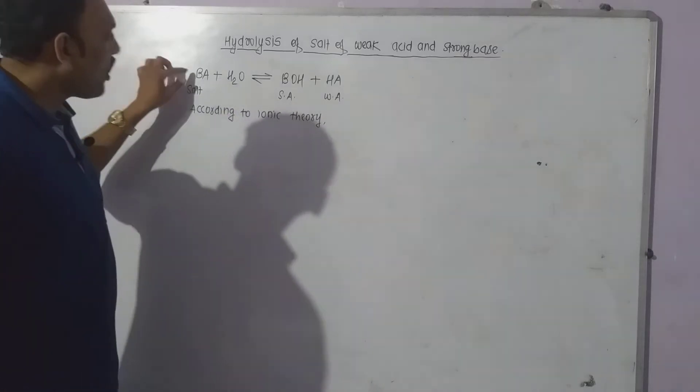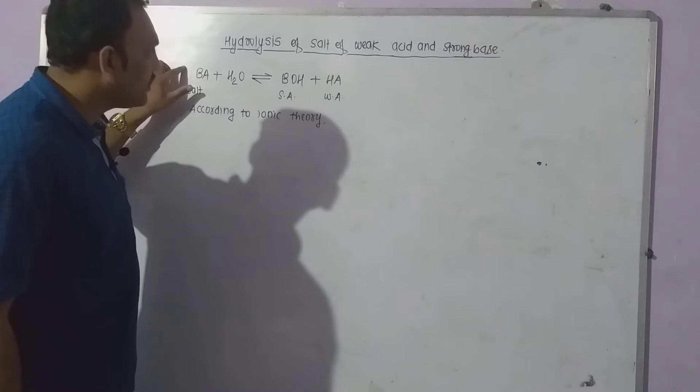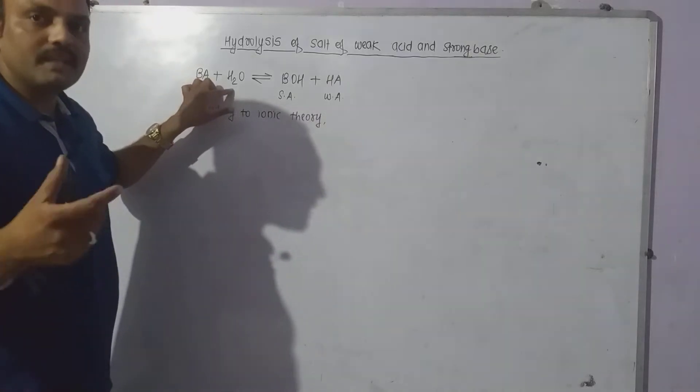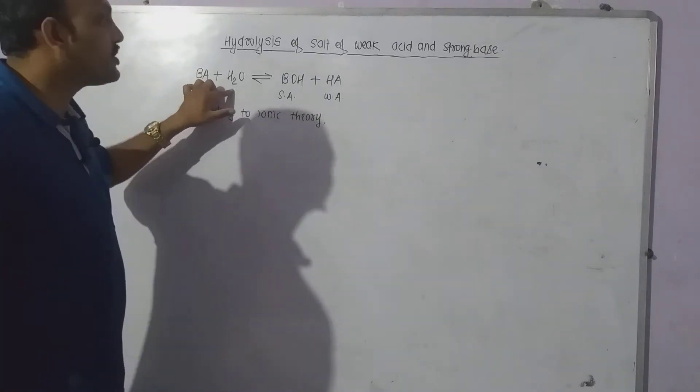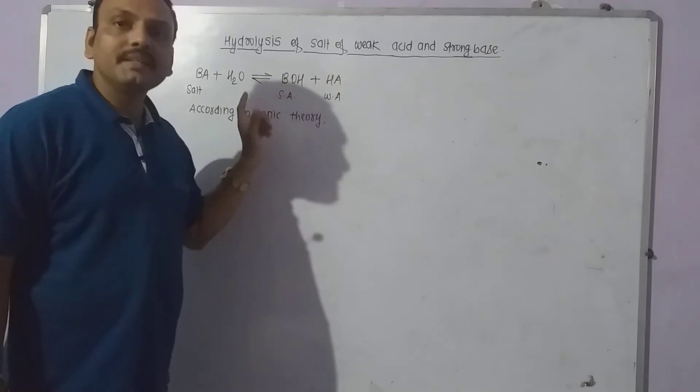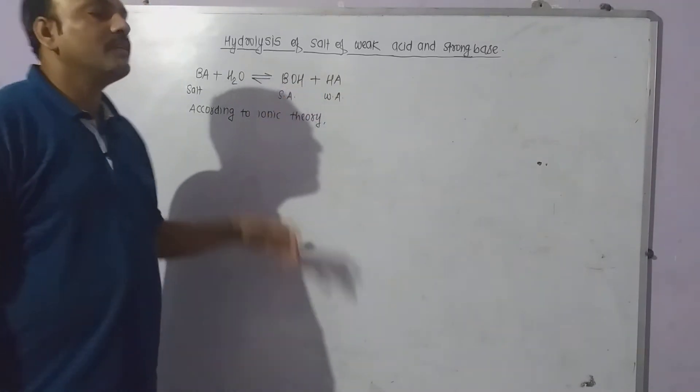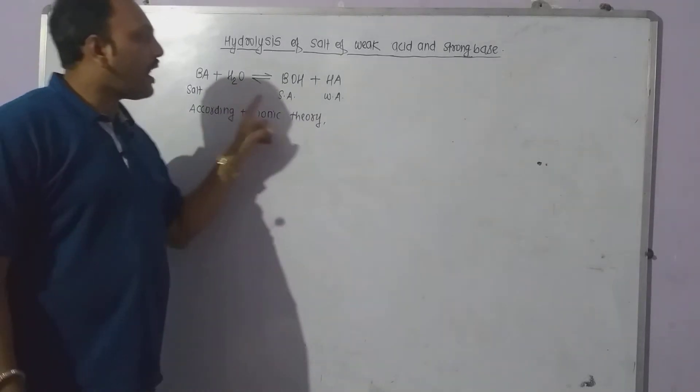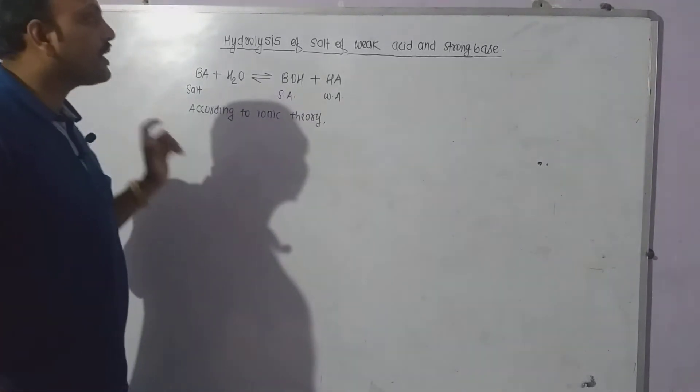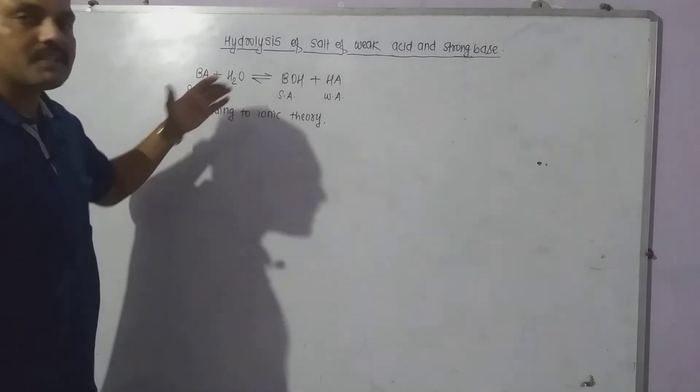We know very well that salt is strong electrolyte, water is weak electrolyte - it dissociates feebly. Our base in this case is stronger whereas acid is weaker. Thus according to ionic theory, ionic reaction of this equilibrium can be given as follows.